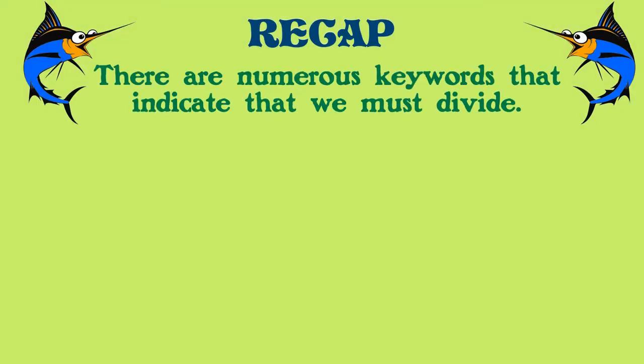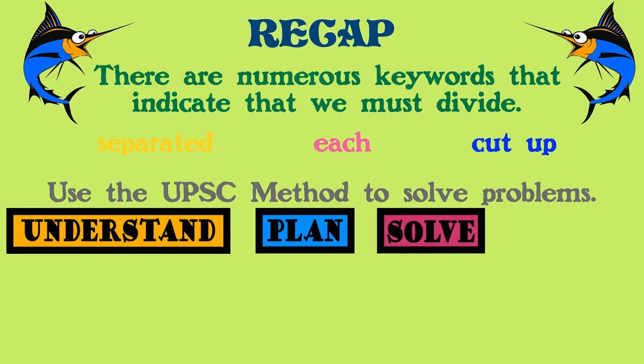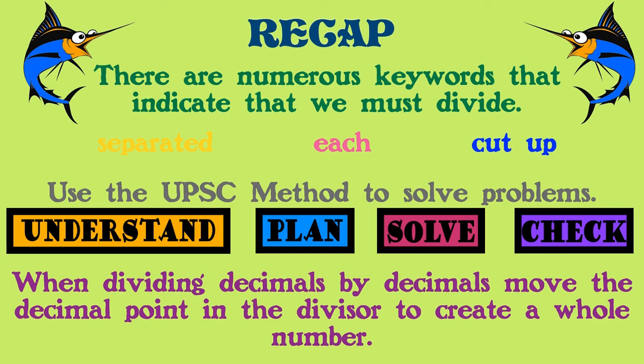We talked about there being numerous keywords that indicate that we must divide. In our word problems, we have keywords such as separated, each, cut up, and many more. All of these words signify or represent the operation of division. We know that we must use the UPSC method to solve our word problems. We must understand them, plan, we must solve, and we must check. Don't forget that check. That's one of the most important steps. Also, we talked about dividing decimals. When dividing decimals by a decimal, we must remember to move the decimal point in the divisor to create a whole number. But we cannot forget that what we do to the divisor, we must also do to the dividend. That's the only way it's going to be even.